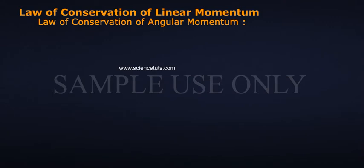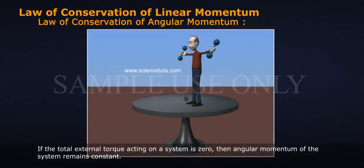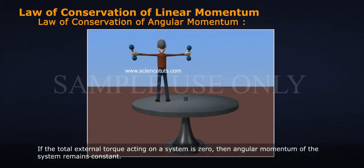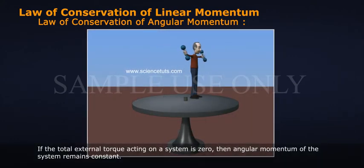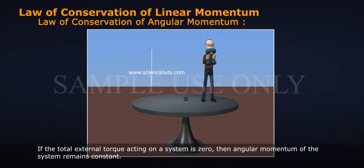Law of Conservation of Angular Momentum: If the total external torque acting on a system is zero, then the angular momentum of the system remains constant.